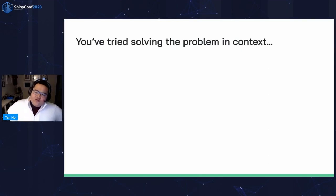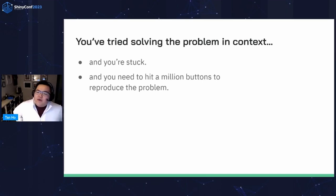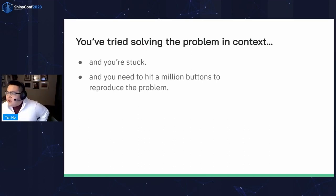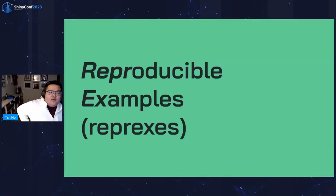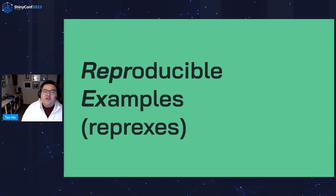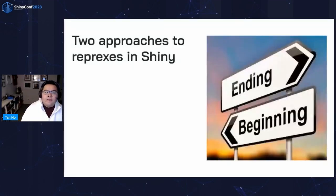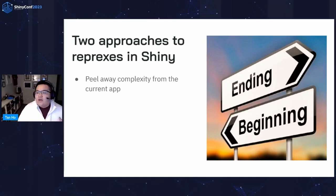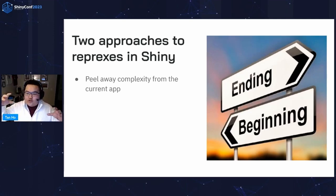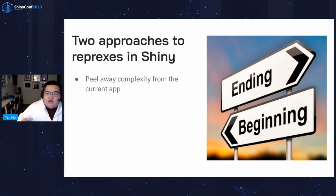So if you've tried solving the problem in context using browser and you're stuck, or you need to hit a million buttons to reproduce the problem and you're frustrated — what next? The answer: reproducible examples. In the R universe, we love reprexes. It's a wonderful tool for simplifying all the extraneous noise surrounding your problem. There are already a lot of resources out there on reprexes, so I'll touch on a few ideas and resources specific to Shiny. Really, in my experience, there are two approaches to reprexes in Shiny.